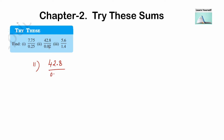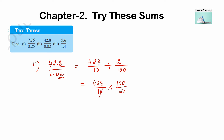The second numerical is 42.8 divided by 0.02. Let us convert this into fraction form: 428 divided by 10, as there is one number after the decimal point, divided by 2 divided by 100, because there are two numbers after the decimal point. Converting this division into multiplication: 428 divided by 10, multiplied by 100 divided by 2. We can cancel a zero, and 2 into 5 is 10, so we get 428 multiplied by 5.